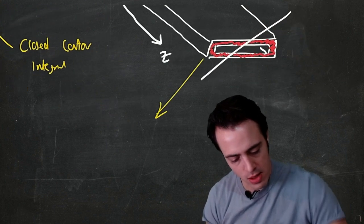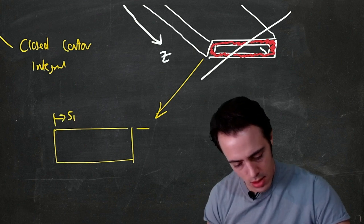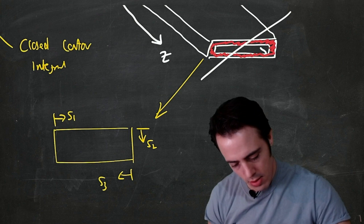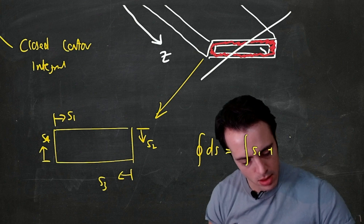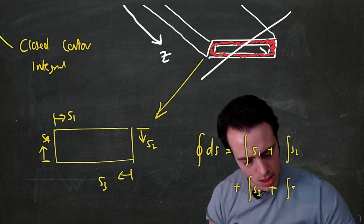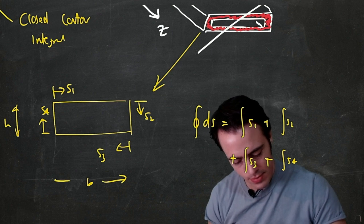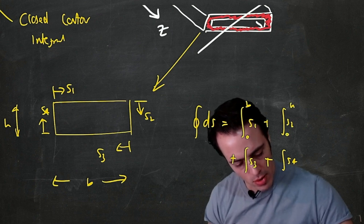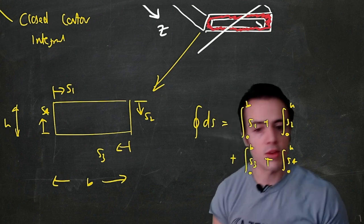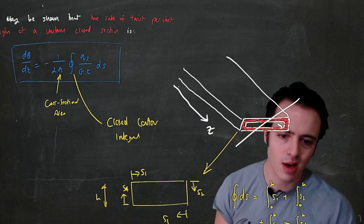A closed contour integral over a rectangular section with ordinates s1, s2, s3, s4 means the integral equals the integral over s1 from 0 to b, plus s2 from 0 to h, plus s3 from 0 to b, plus s4 from 0 to h — a complete integral all the way around the perimeter ds.